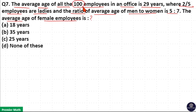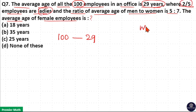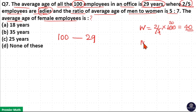Total number of employees is 100 and average age of these 100 employees is 29 years. Now 2/5 of employees are ladies, so number of women is 2/5 of 100, which equals 40. That means number of men is 100 minus 40, which is 60.